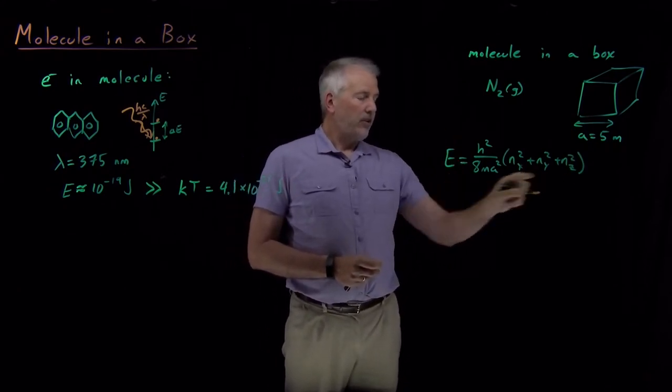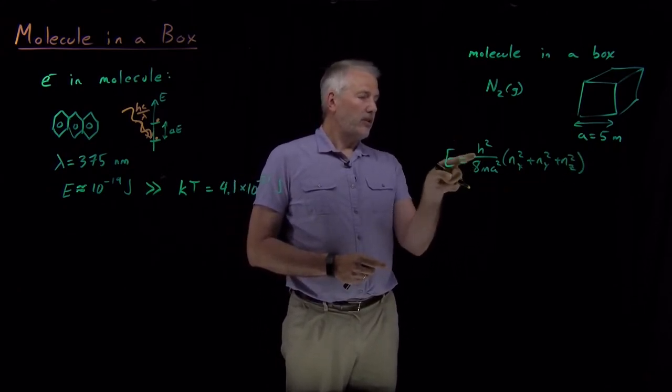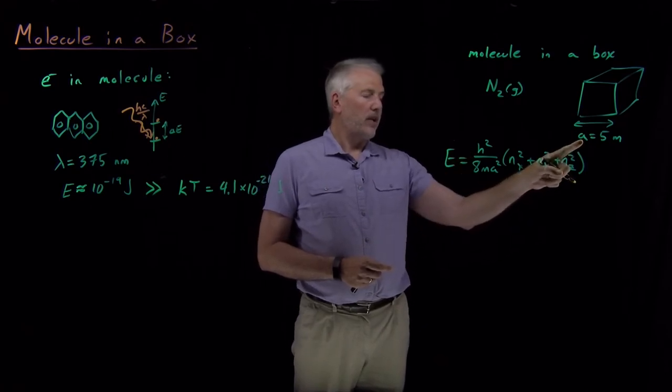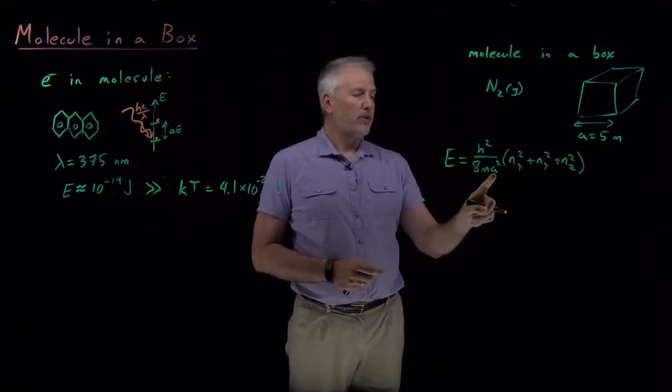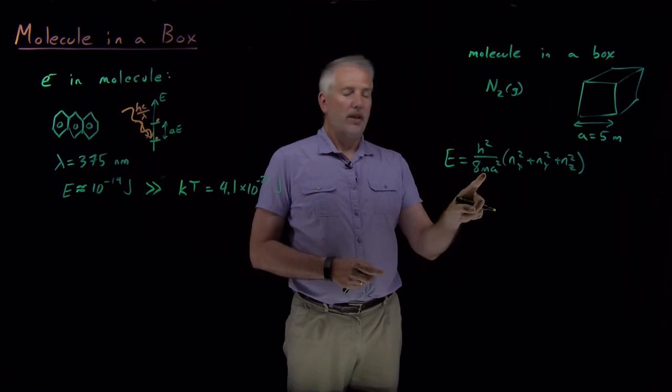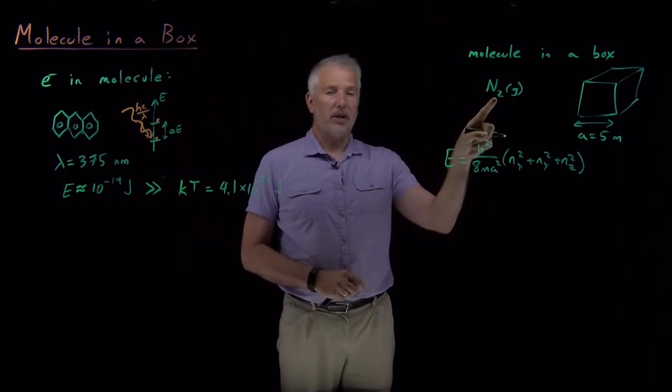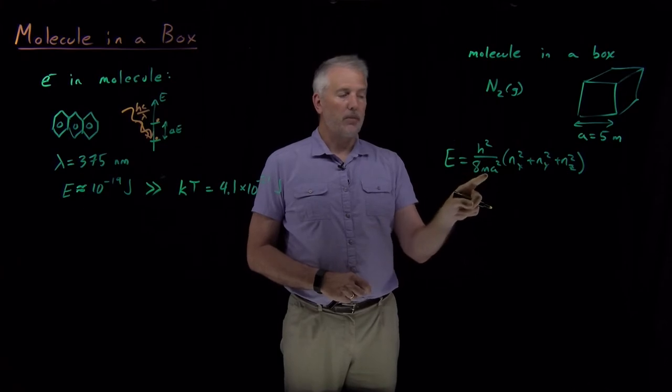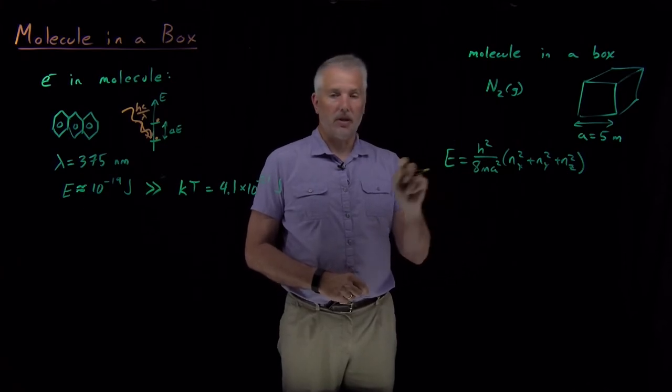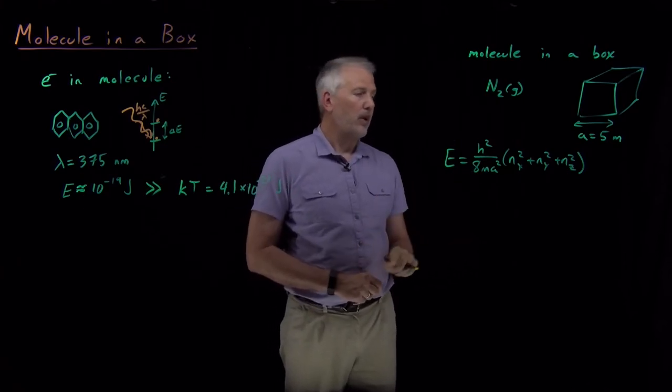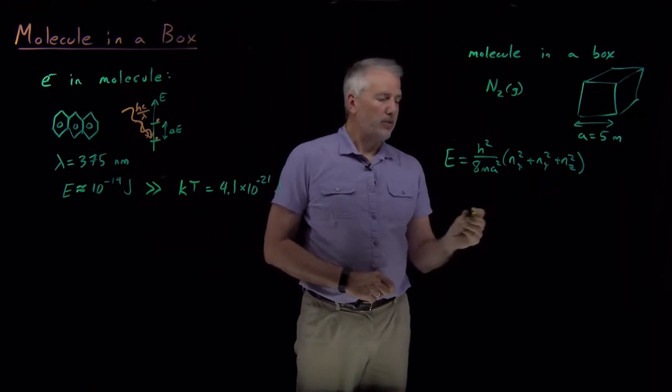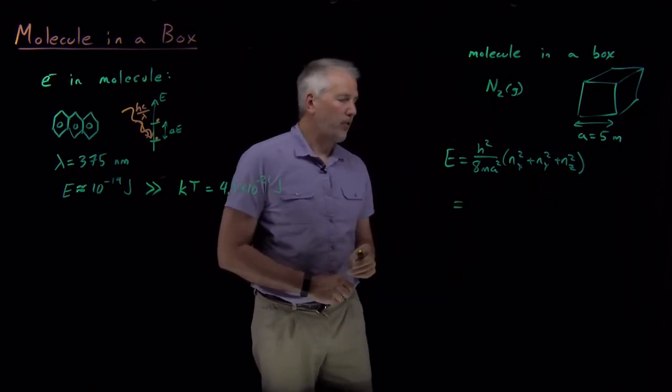So in order to calculate these energies, I need to know, I certainly know what Planck's constant is. I've assumed a value for the size of the box. The mass we need here, remember that we're not talking about an electron anymore, we're talking about a nitrogen molecule, so we would need the mass, the molar mass of a nitrogen molecule, so we know that value. And we also need these n values.